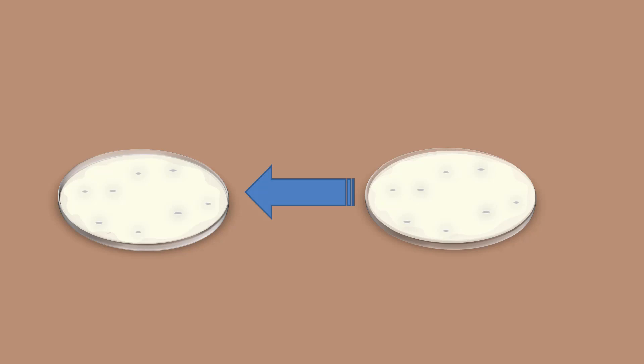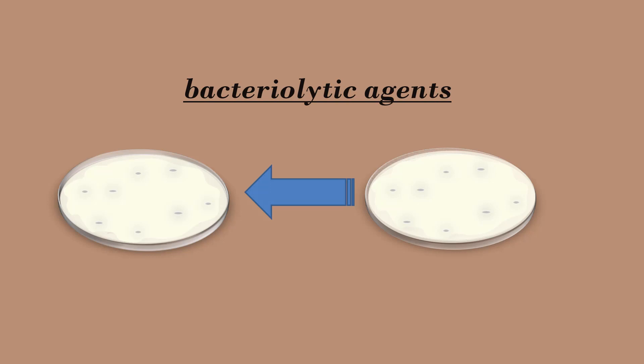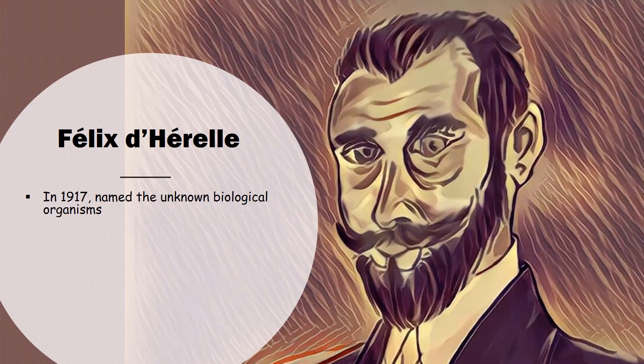Twort also found that he could transfer the unknown plaque-forming agents from one bacterial culture to another. Thus, he called these unknown agents bacteriolytic agents.